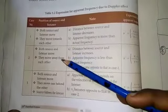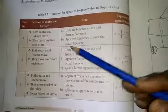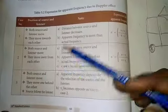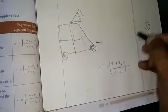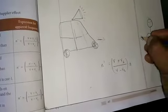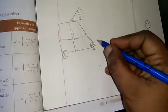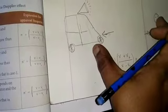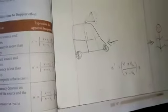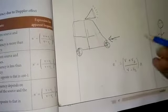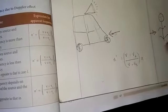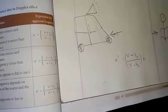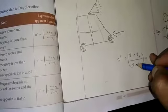Both source and listener move — second condition: they move away from each other. The source's speed increases and is now reversed. The distance increases between source and listener, so the sound is also reduced. In this condition, original velocity and listener's speed increases — they move away from each other.